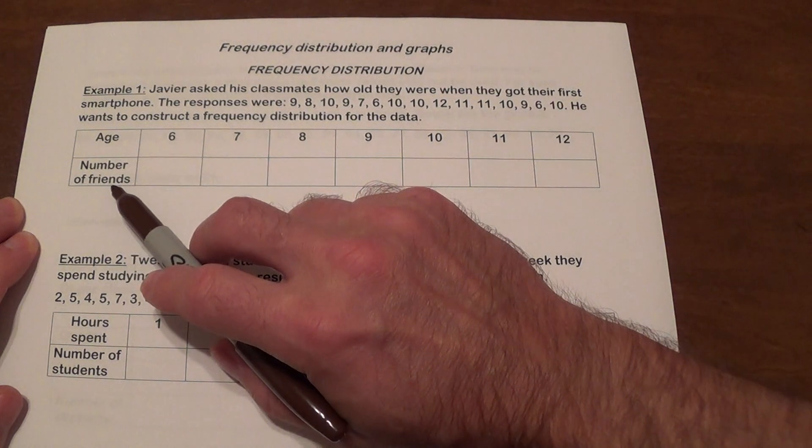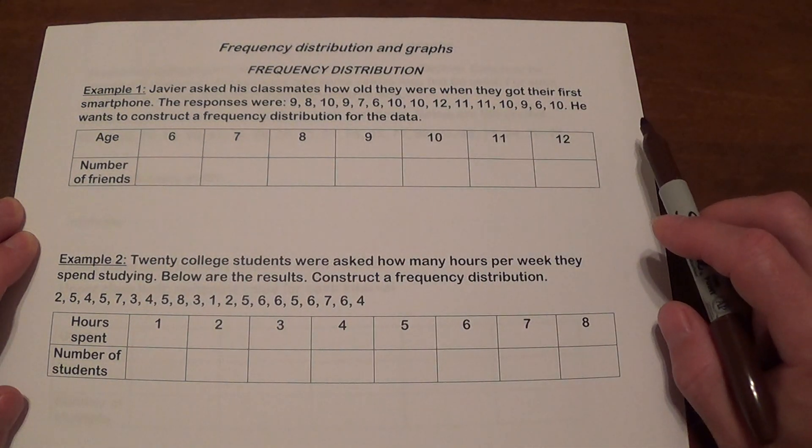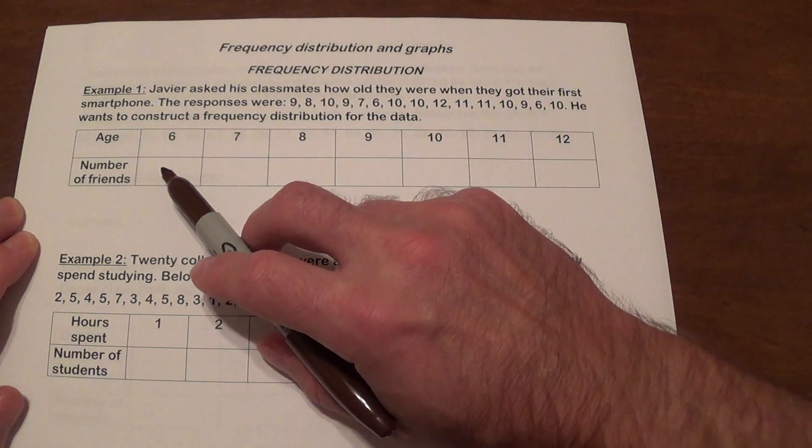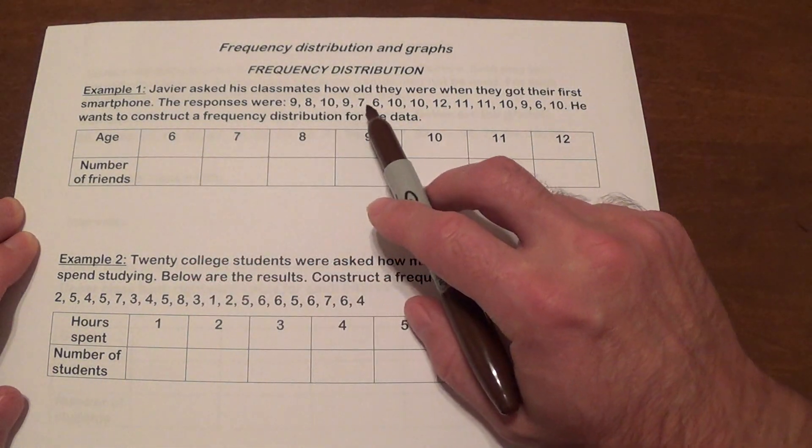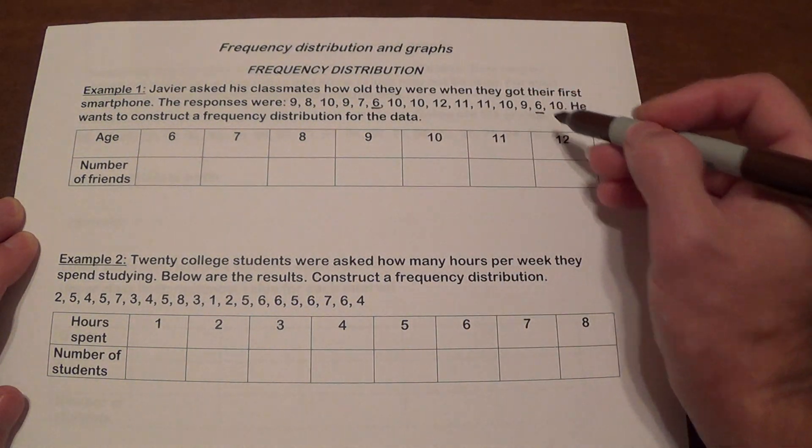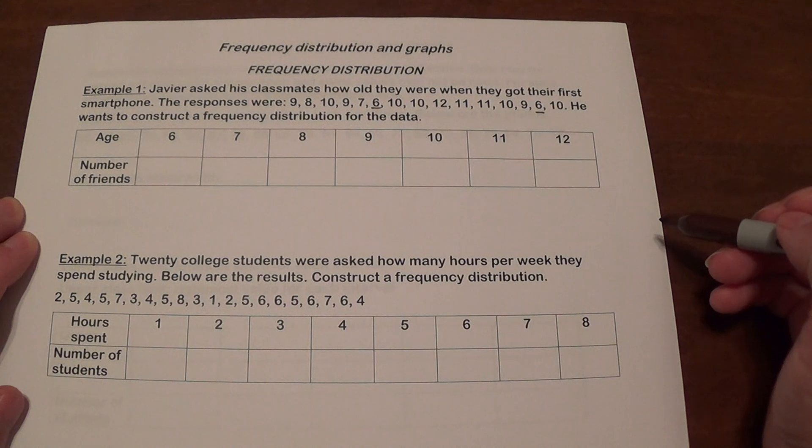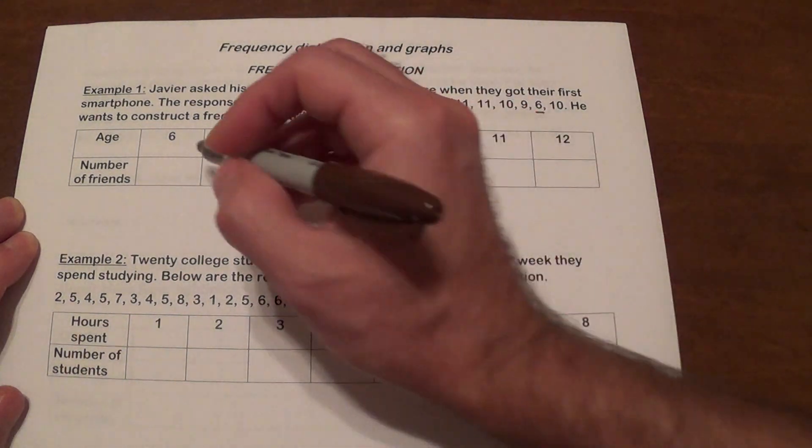So we have age, number of friends. These are the ages. They only range from 6 to 12. So let's see. How many friends got it when they were six? Let's see. There's one. There's two. So that will be two. Let's make sure we don't miss anything. So two.